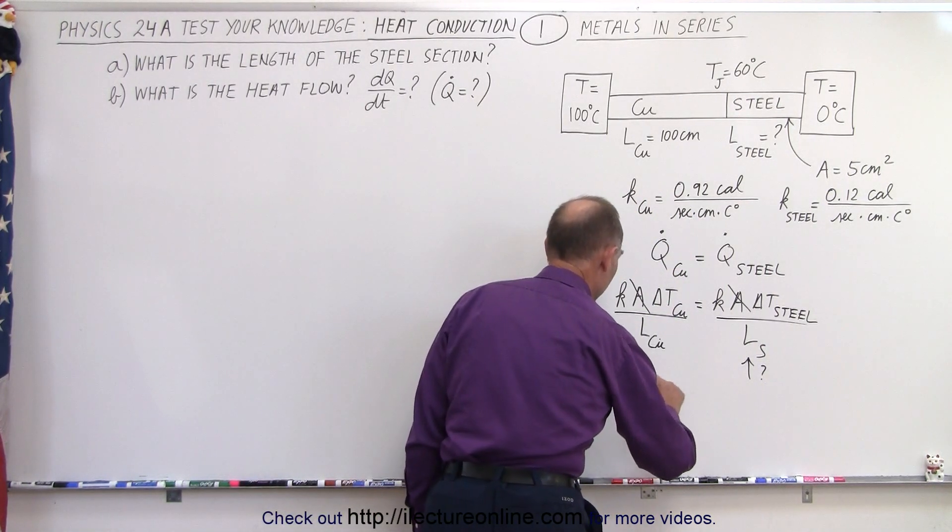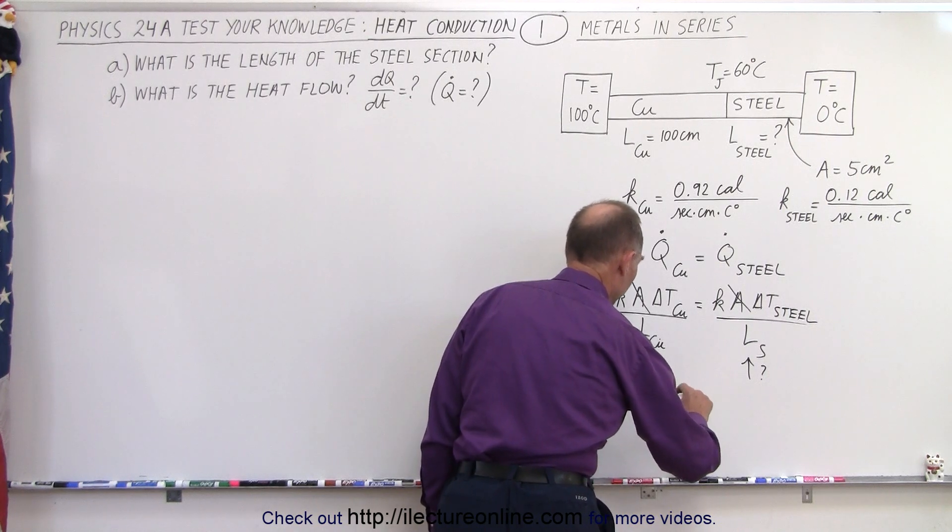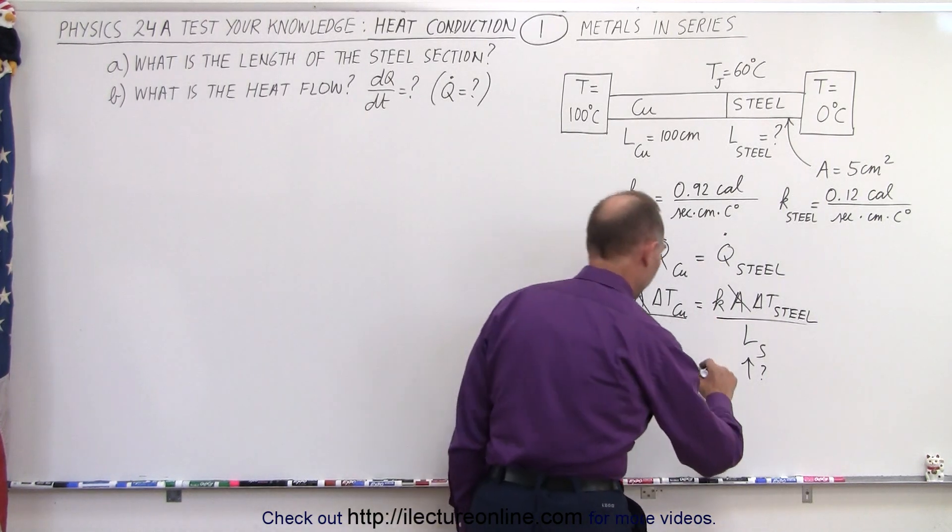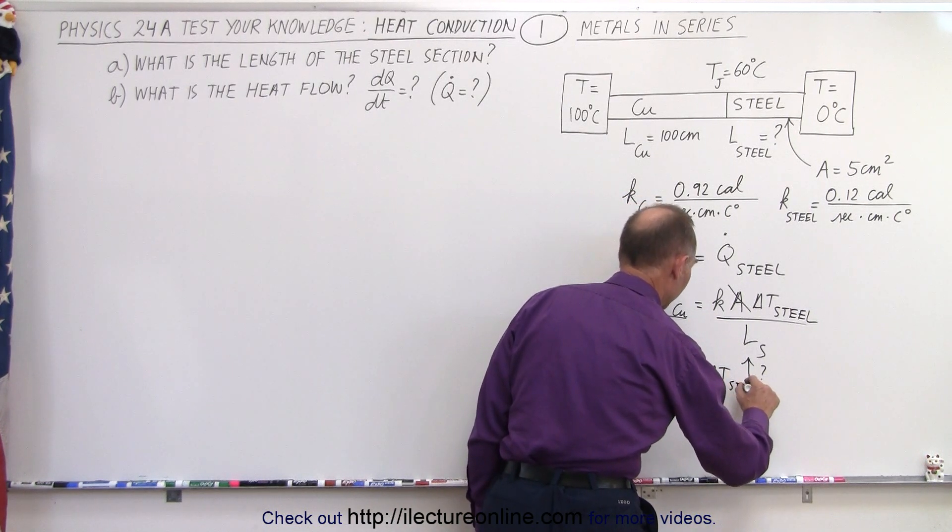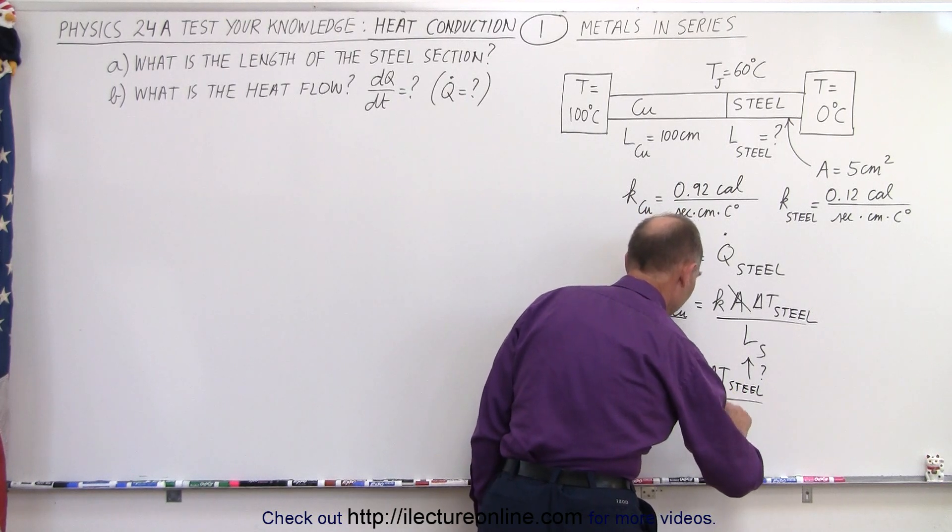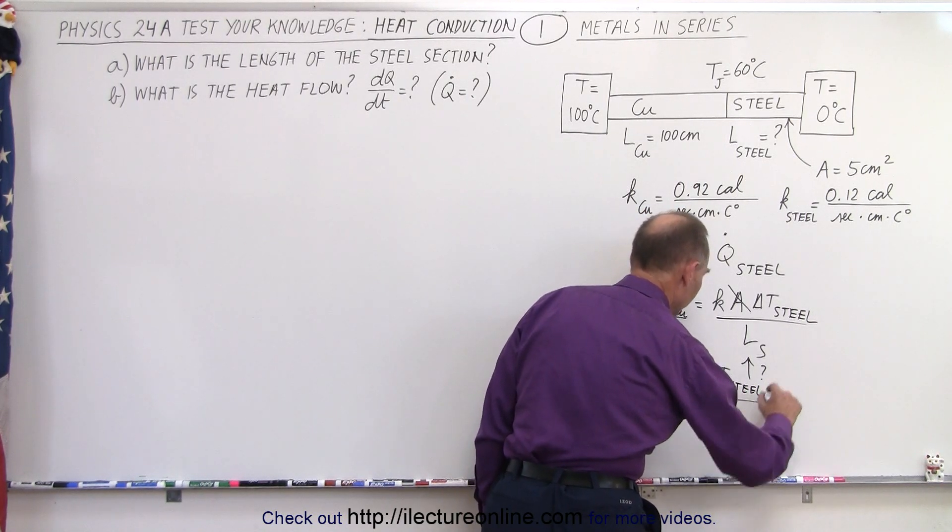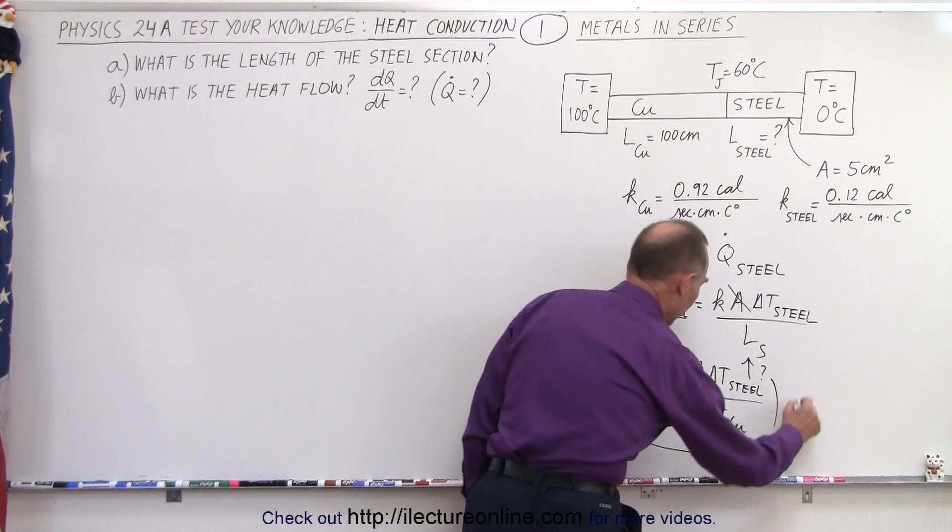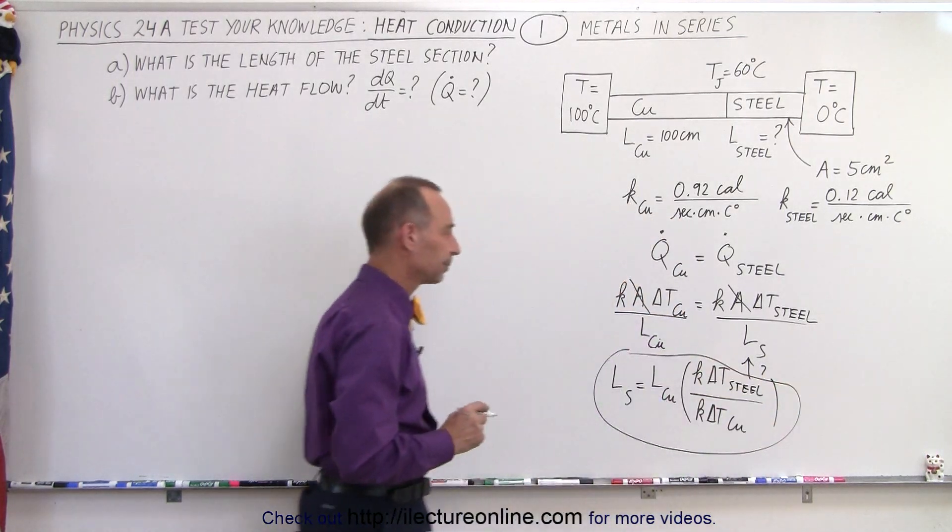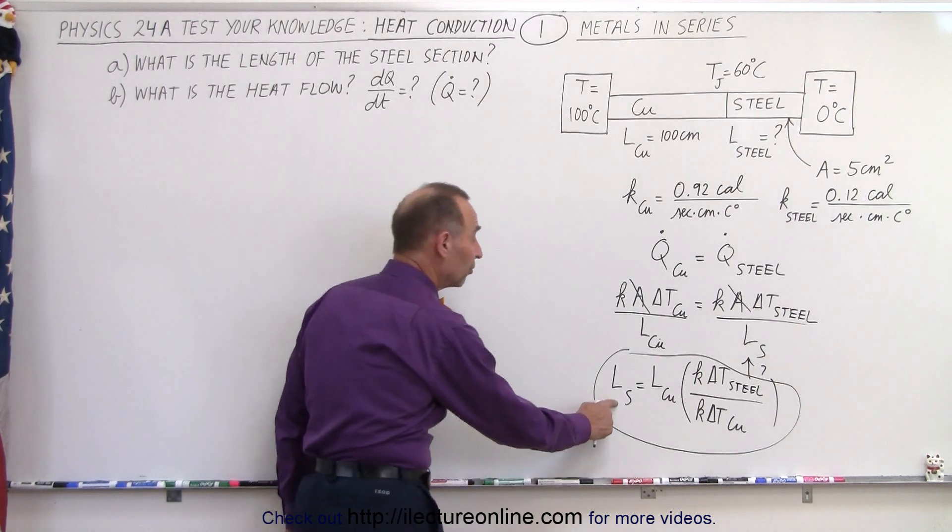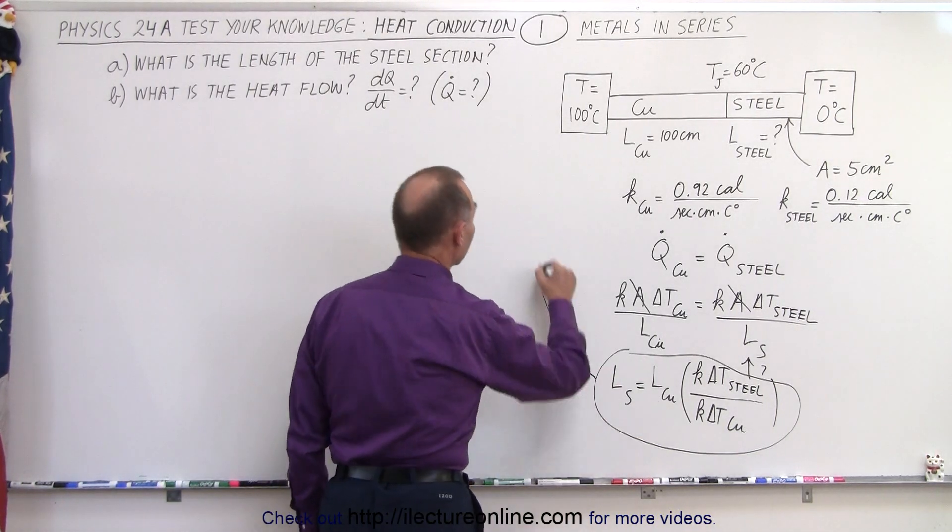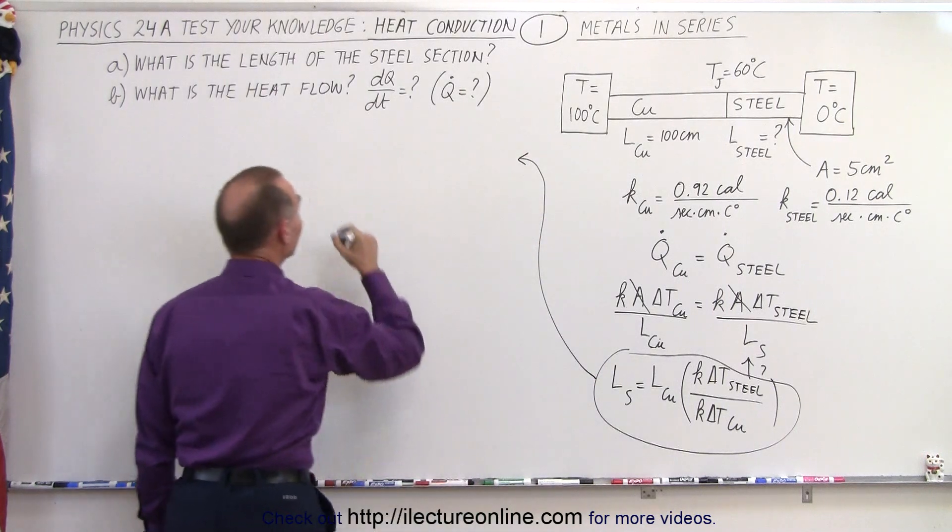So the length of the steel equals the length of the copper times the ratio of k times delta t for the steel, divided by k times delta t for the copper. So what I've done here is I've rearranged the equation so I can solve for the length of the steel in terms of length of the copper.